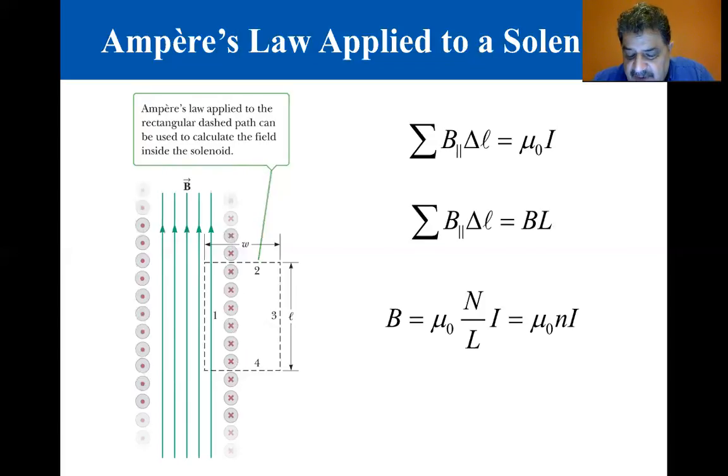This ends the section on magnetic fields of current loops and solenoids. The next section is 19.10 magnetic domains, and I think it'll be the last section also.